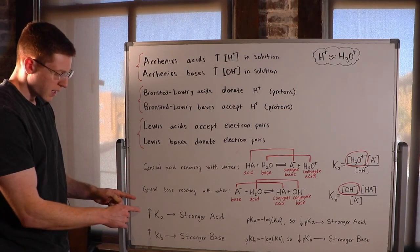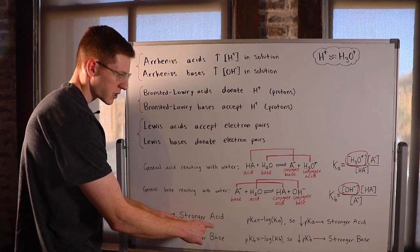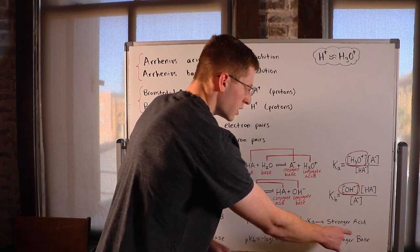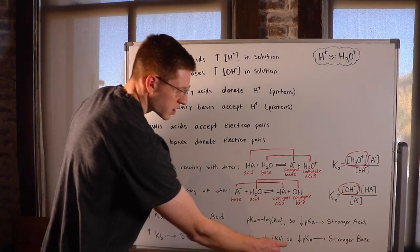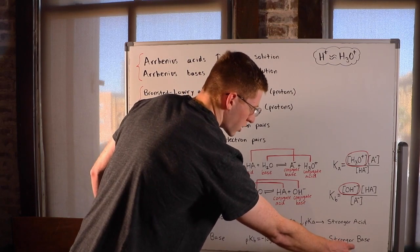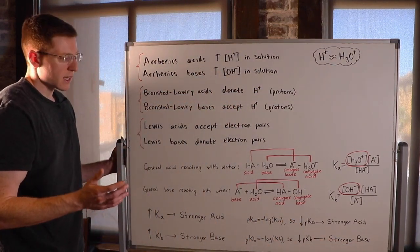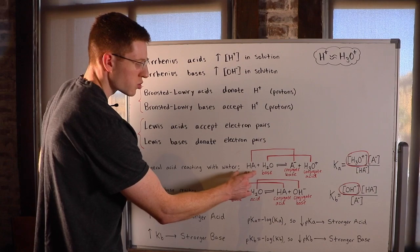So just remember, bigger Ka, stronger acid. Smaller pKa, stronger acid. Bigger Kb, stronger base. Smaller pKb, stronger base.